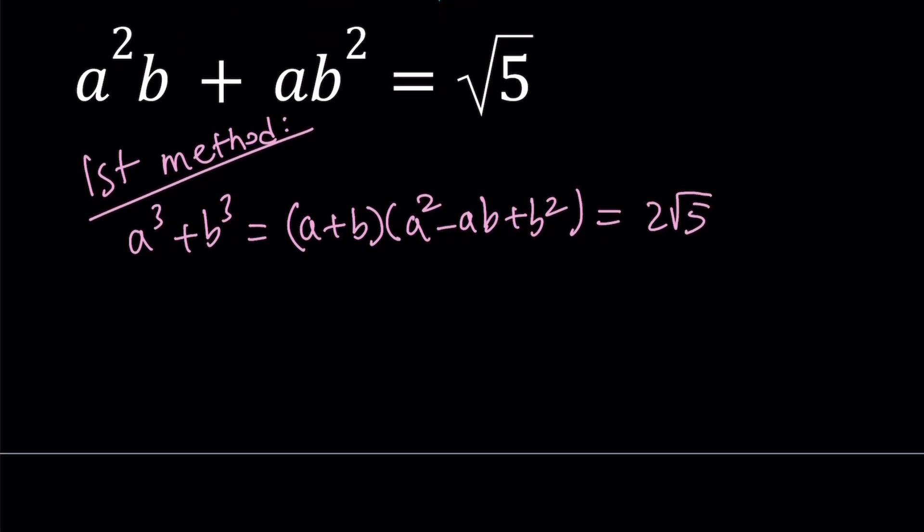So I'm going to take that a² - ab + b² and manipulate it. I'm going to make it look like (a+b)² but we're going to have some extra terms. So I can write a² + b² as (a+b)² - 2ab, and then I have an additional -ab, so I subtract that as well. And the product is equal to 2√5.